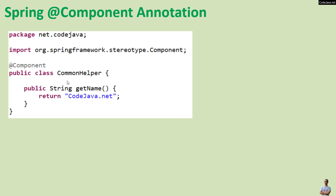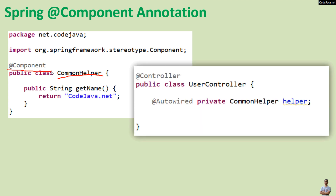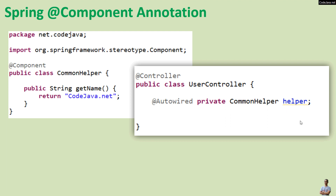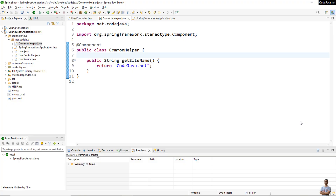Let me show you a quick example. We have a very simple class here — CommonHelper — that is annotated with the @Component annotation. We can then autowire this component in another component, such as in a controller, via an @Autowire field. Let me show you the coding in action in a Java Spring project.